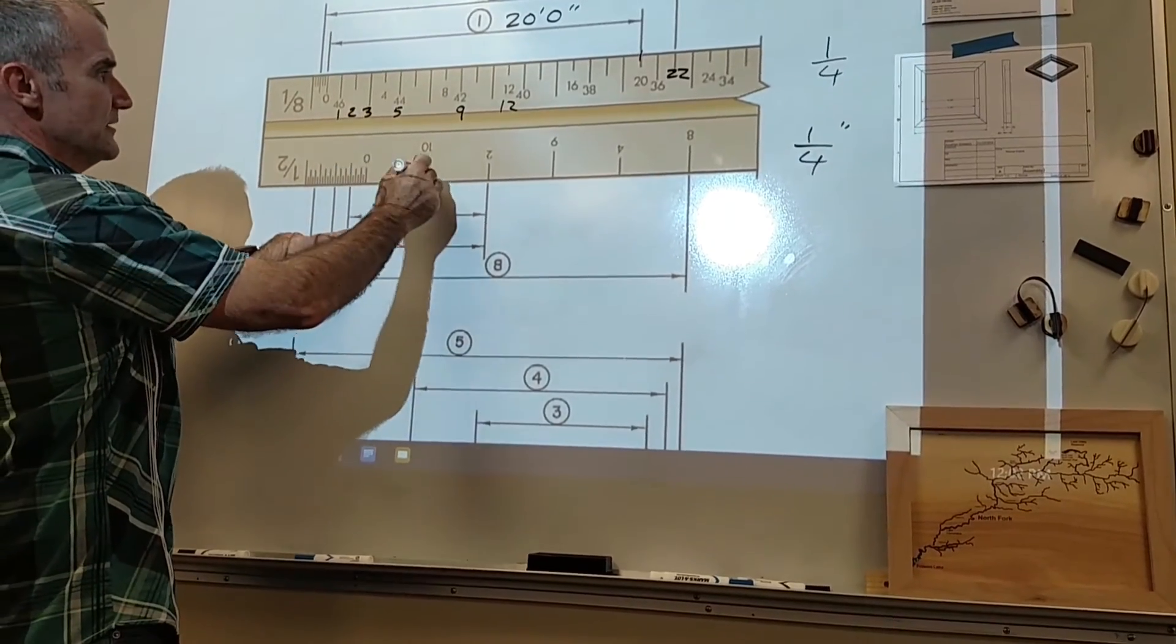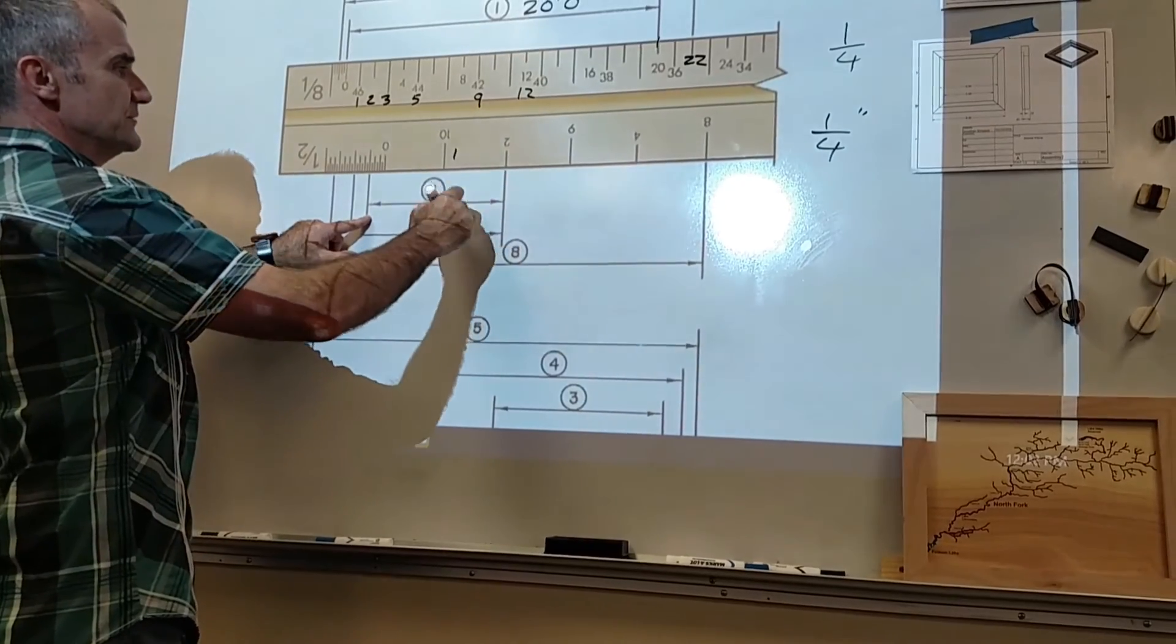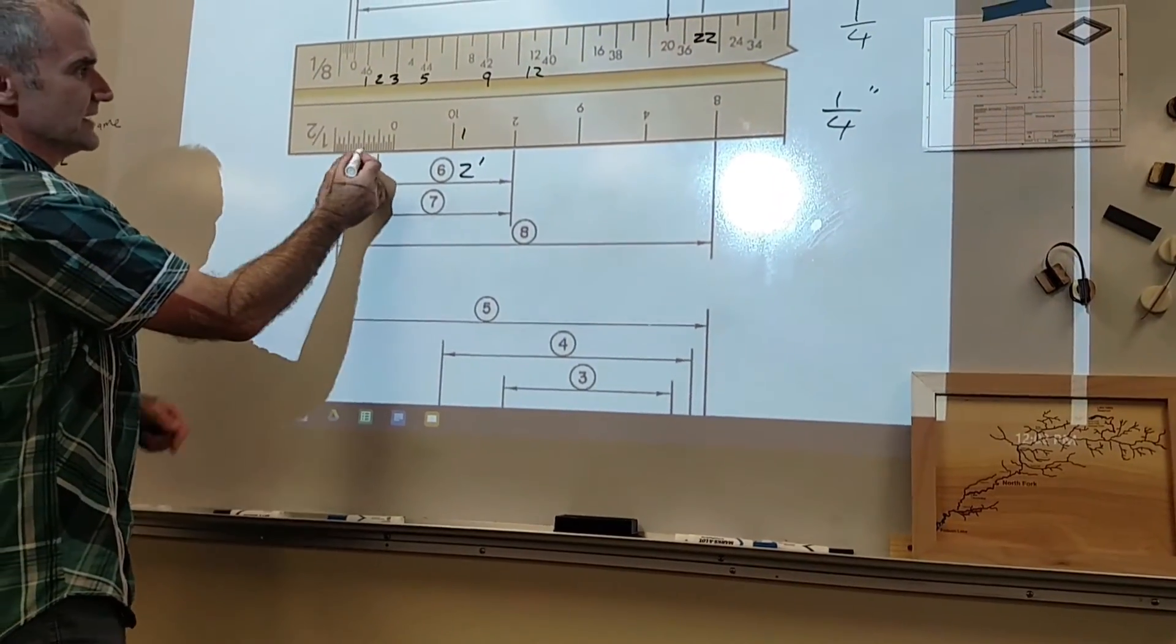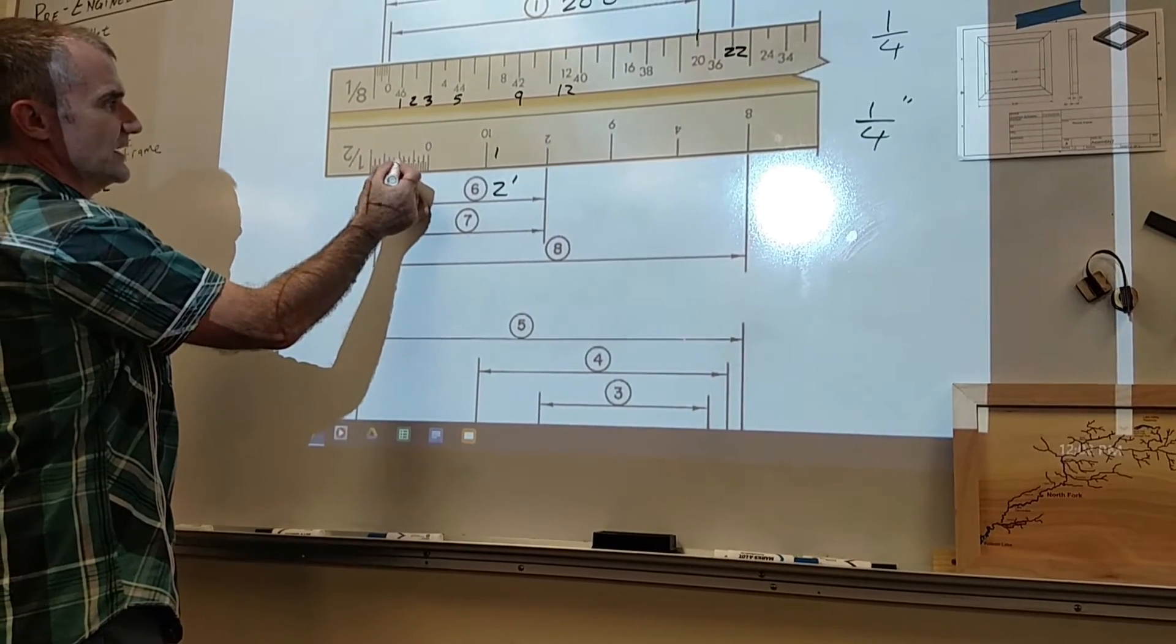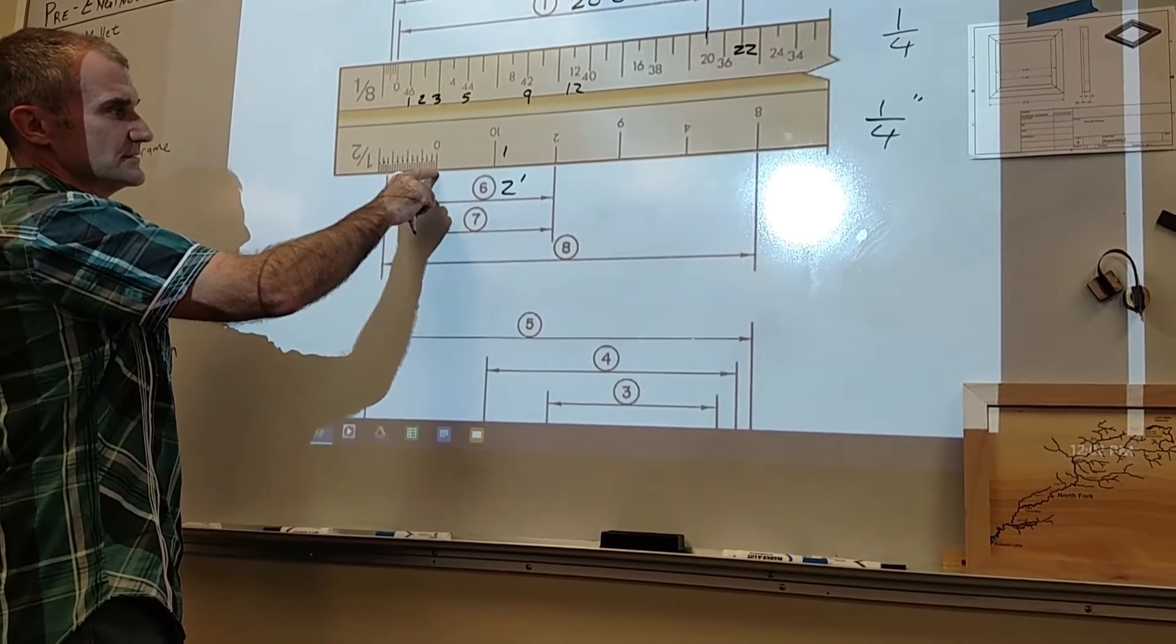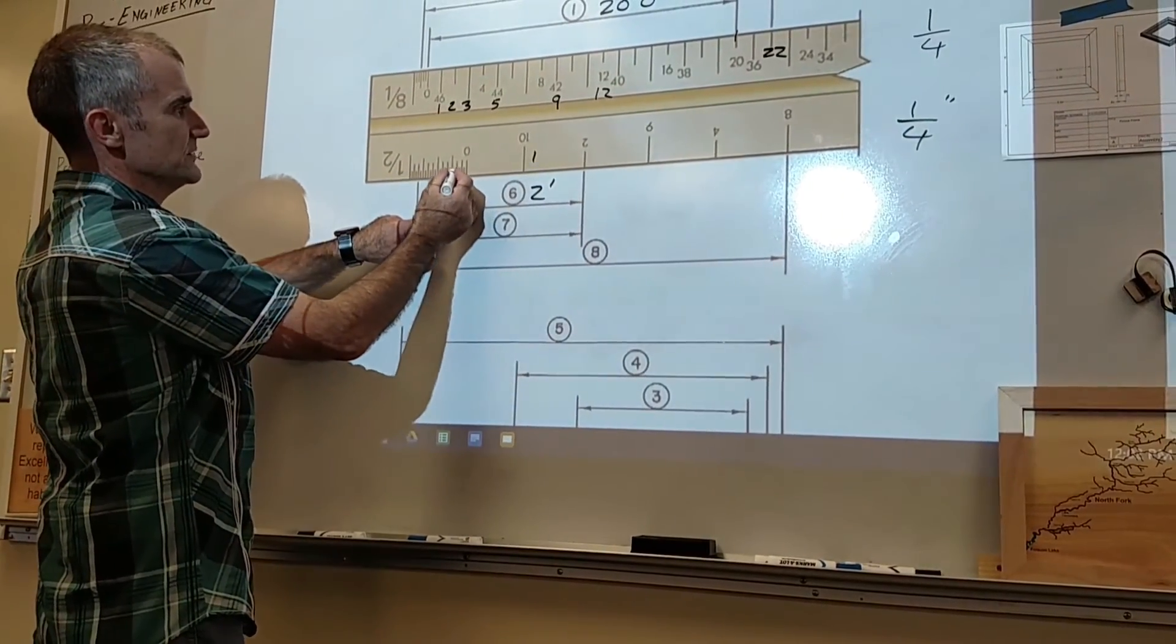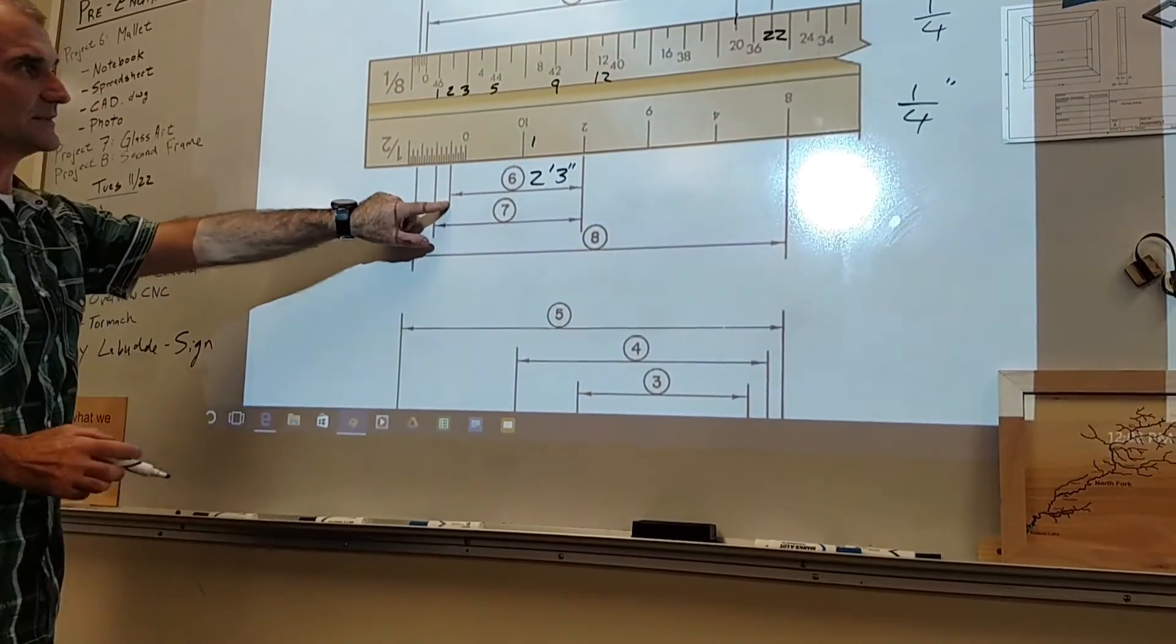I go over zero, one, two, three, four. So I'm over two feet. And then I've got to go to the left here. I've got to count up how many marks are. Every other mark is one, two, three, four, five, six, seven, eight, nine, ten, eleven, twelve. So every second mark is an inch. So that means I'm at two feet, one, two, three inches.